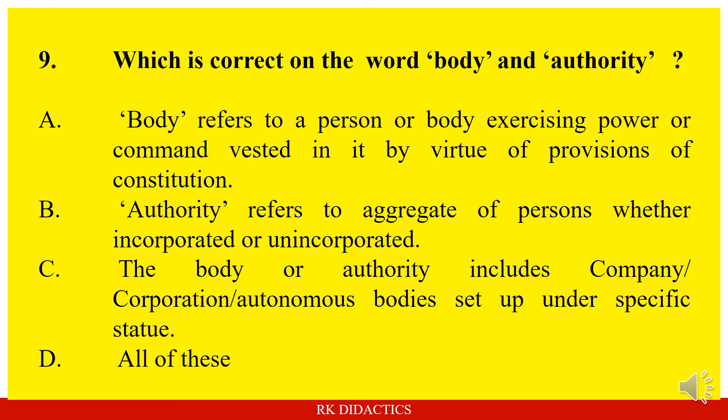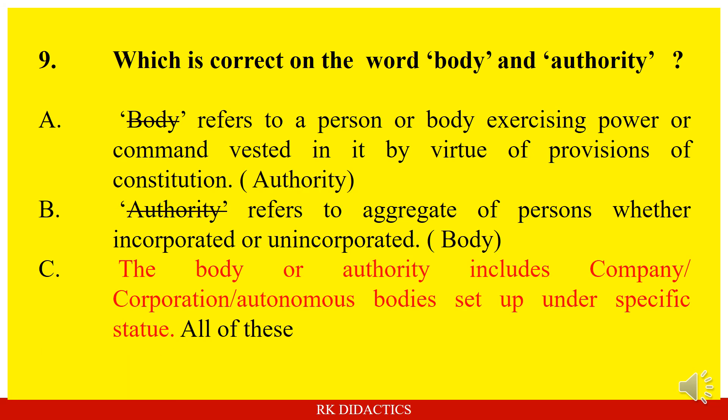Question: Which is correct on the word 'body and authority'? Option A: Body refers to a person or body exercising power or command vested in it by virtue of provisions of the constitution. Option B: Authority refers to aggregate of persons whether incorporated or unincorporated. Option C: The body or authority includes company, corporation, autonomous bodies set up under specific statute. Option D: All of these. Answer: Only C is correct. A and B are not correct because the definitions of body and authority have been interchanged.